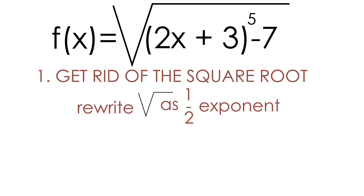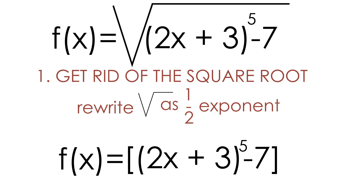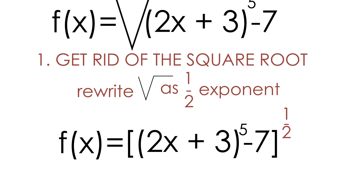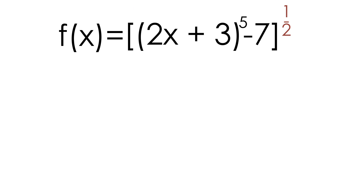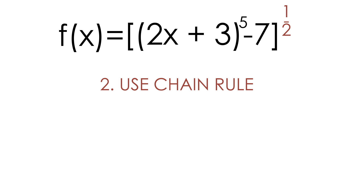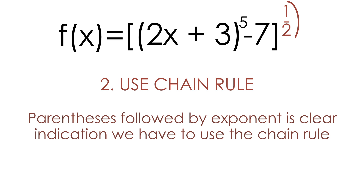So let's rewrite our function as 2x plus 3 to the fifth, minus 7, all raised to the one-half power. Notice how we have a big parentheses followed by an exponent of one-half. This means we have to use the chain rule to take the derivative — parentheses followed by an exponent is a clear indication that we have to use the chain rule.